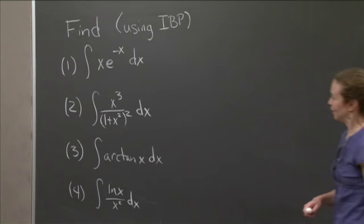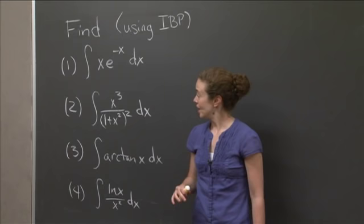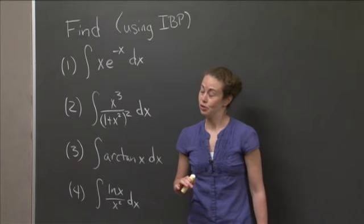OK, welcome back. So again, what we're looking for is antiderivatives for each of these four functions. And now what I'm going to do is help you pick u and v prime, and then I'm going to show you what answer I got. I'm going to let you do the work in the middle. So let's start off with number one.